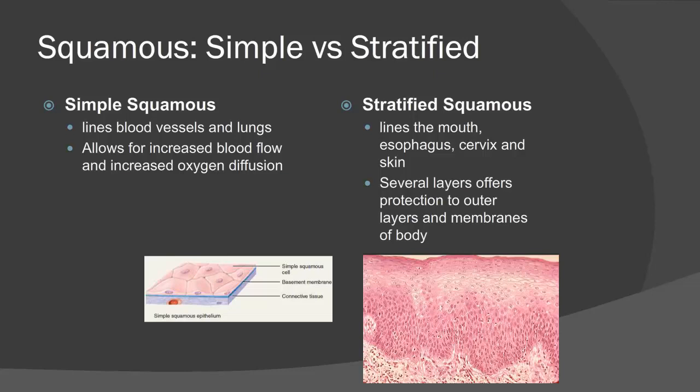Simple squamous cells are a single layer of flat cells present at sites such as the kidneys and lungs, allowing increased blood flow and oxygen diffusion across a very thin layer. Stratified squamous still consists of flat cells but in multiple layers, found in areas exposed to multiple stressors such as pressure, touch, and food passage — including the mouth, esophagus, cervix, and skin. The sloughing off of the top layers promotes protection of the basilar cells, allowing continuous growth for multicellular protection.